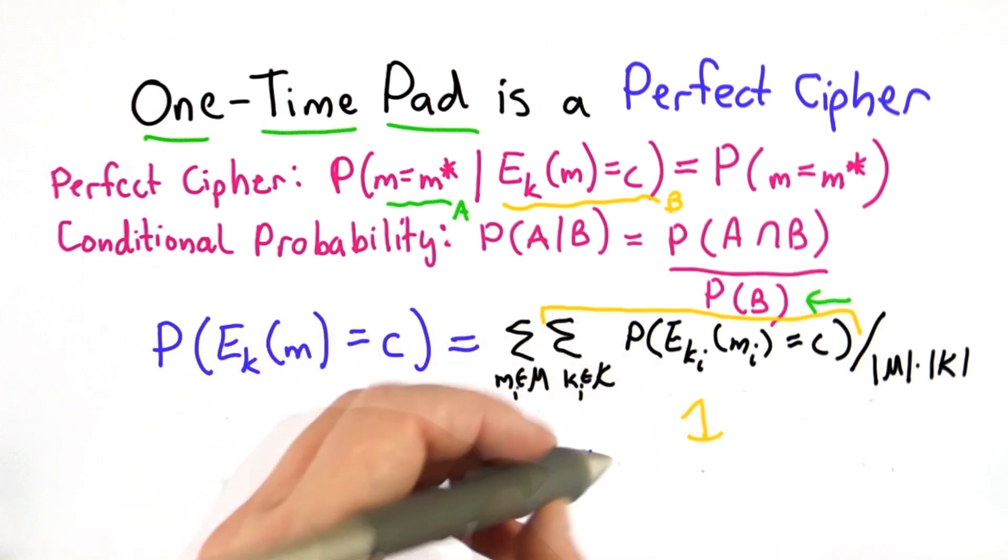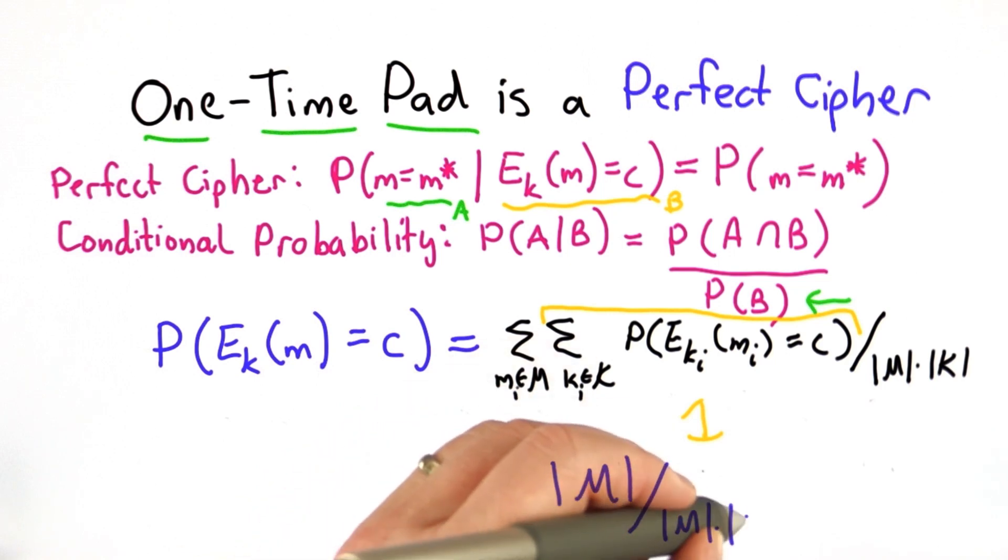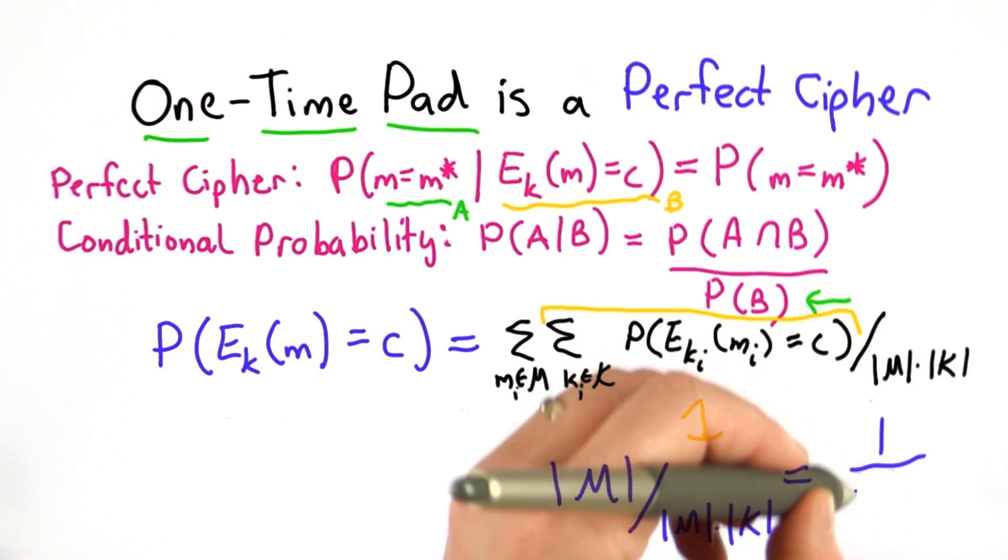So that means we're going to get the number of messages divided by the number of messages times the number of keys. So that's equal to 1 over the number of keys.